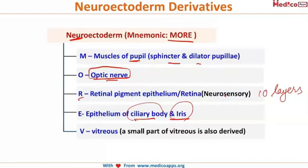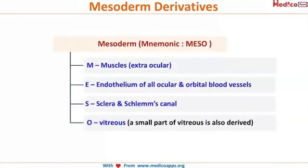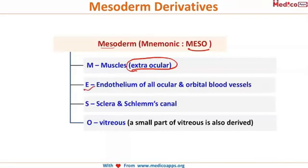For mesoderm, the mnemonic is MESO. M is for the extraocular muscles — the recti and the obliques. E is for endothelium of all ocular and orbital blood vessels. S is for the sclera and Schlemm's canal. Vitreous comes from everywhere — from all the germinal layers.